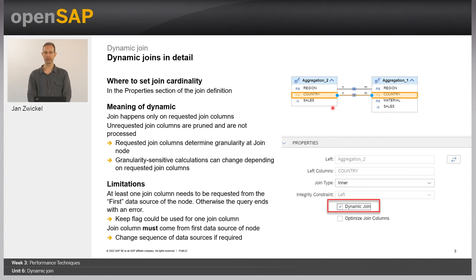There are also some limitations, because at least one join column node needs to be requested in the query — otherwise you will get an error message. For example, you can guarantee that one column is always requested by setting a keep flag. This keep flag must be set on the first data source of the join. If you want to use a column from the other source, then you can change the order of the data sources.